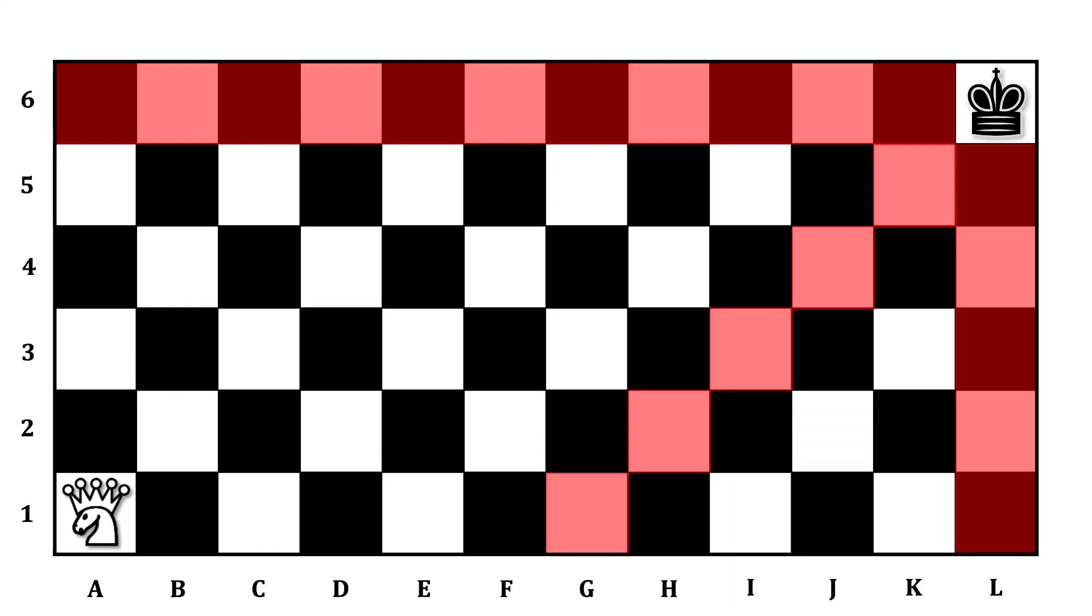But the Amazon is even more powerful than that. Remember that she can jump like a Knight. And as a consequence, both J5 and K4 are no-go zones. If you land the Amazon on either of those squares, your opponent will use it like a Knight to capture the King on the very next turn.